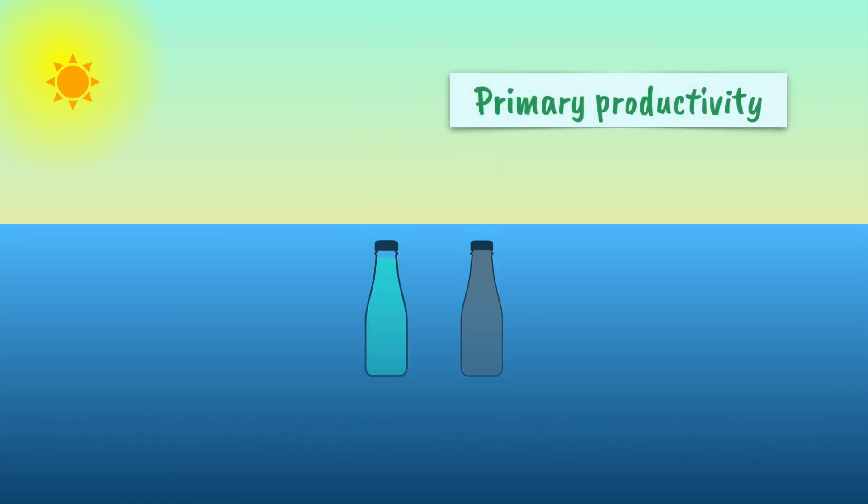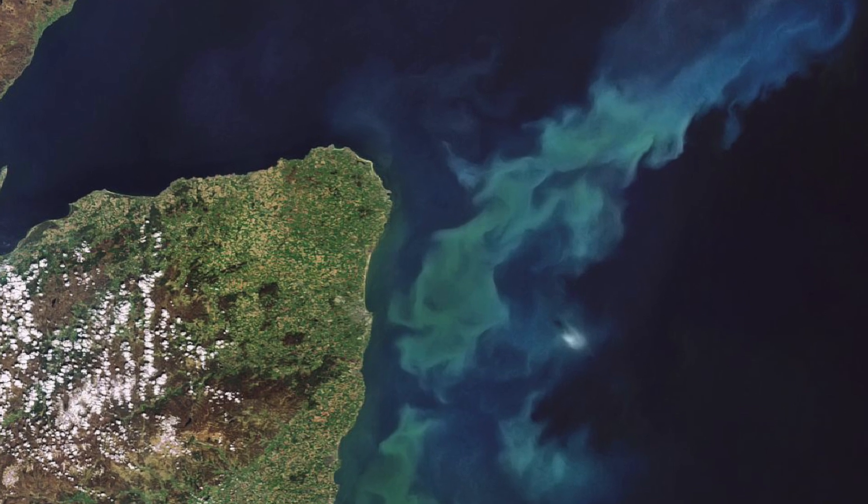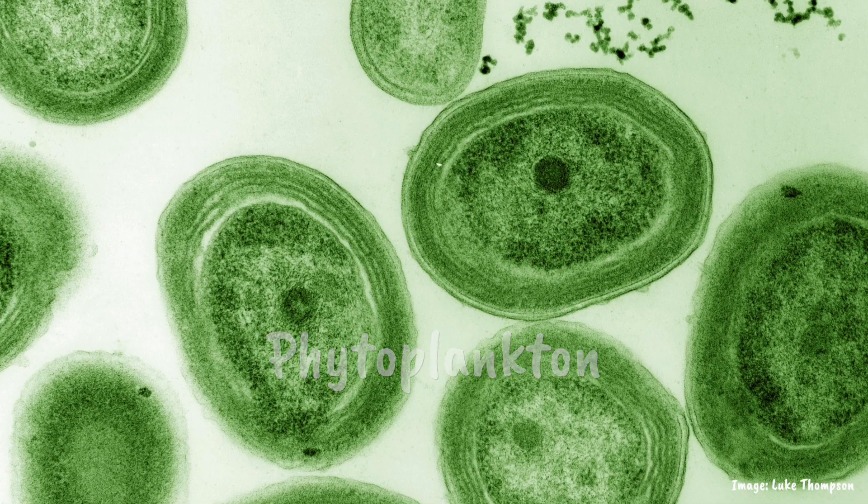The light and dark bottle method is a way of measuring primary productivity in an aquatic ecosystem. In pretty much all natural waters, like oceans, lakes and rivers, there are tiny microorganisms called phytoplankton carrying out photosynthesis, fueling aquatic food webs.